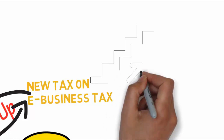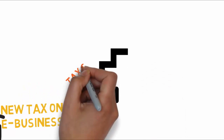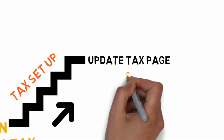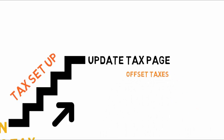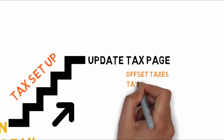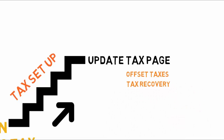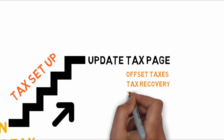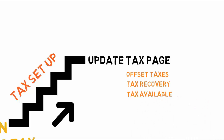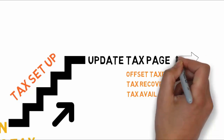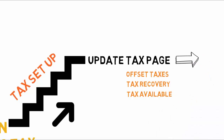After you have completed all the necessary steps in your tax setup, use the Update Tax page to perform these tasks. For offset taxes, enter a 100% recoverable rate. For tax recovery, review and update the default primary recovery rate code and default secondary recovery rate code. Make each tax available in transactions. When you enable the Make Tax Available for Transactions option, a business tax runs a series of checks to ensure that all of the definitions related to the tax have been defined.